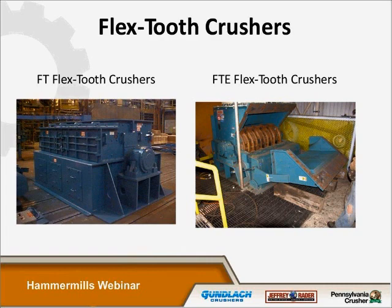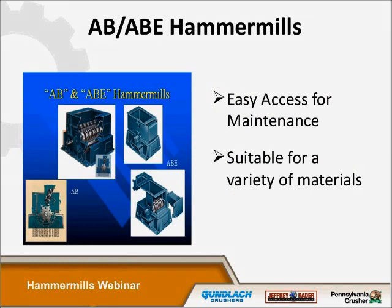The other type of one-way machine is the flex-tooth crusher. Here I've shown the standard FT flex-tooth machine, and then the easy-open FTE model where the frame is split to allow easy access to the interior. From the Jeffrey brand, we can also offer the AB and ABE hammer mill line — the ABE is the easy-open frame style. The difference between the flex-tooth machine and the ABE hammer mills is basically in the hammer design.